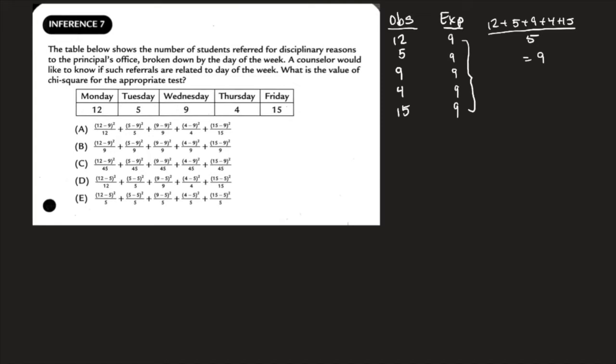At that point, we have our observed, we have our expected. We can simply use the expected value formula. We can use the chi-squared statistic formula, which really says it's going to be the observed value minus the expected value, all at the top of that, squared, all divided by the expected value.